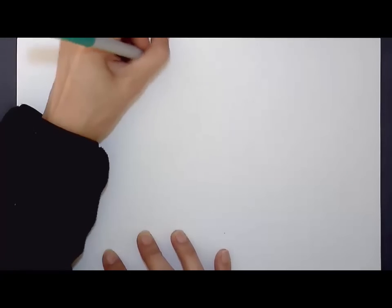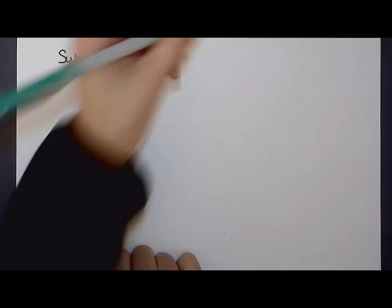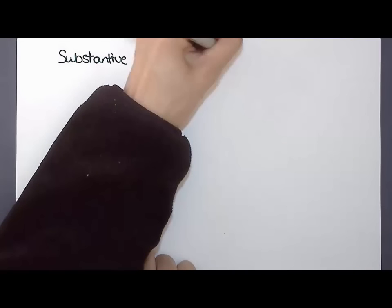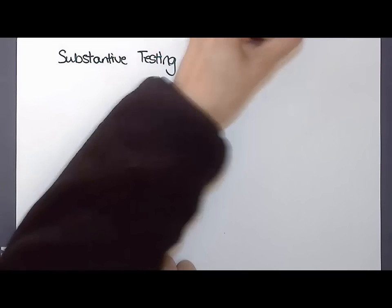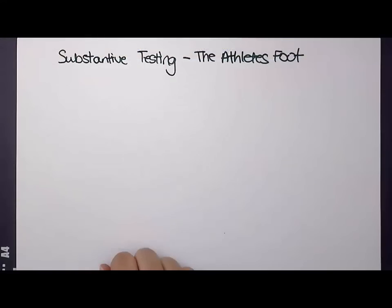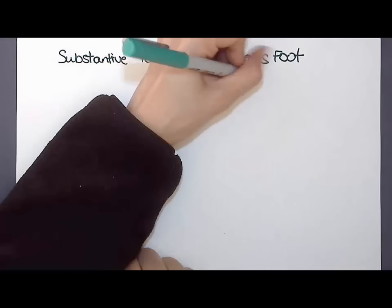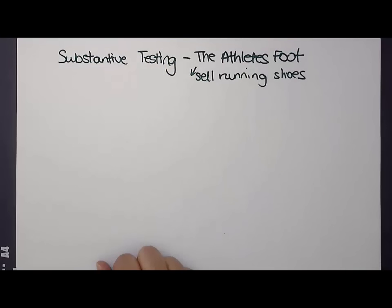I put out a call on my Facebook channel today for ideas on companies we could use to look into substantive testing and designing substantive tests in more detail. I had a request for more examples, so thanks to one of my students, Tim, who suggested we look at the Athlete's Foot — similar to Foot Locker and other footwear retailers that sell running shoes. I'm going to use the Athlete's Foot to do some examples today.